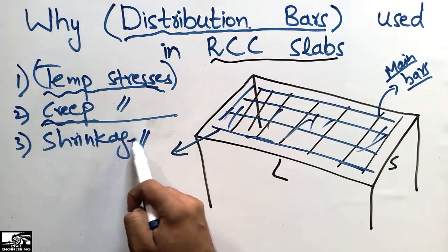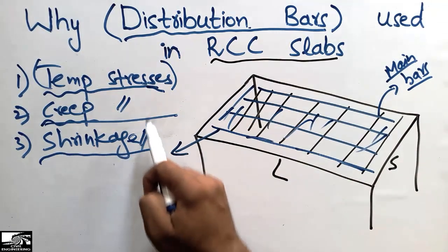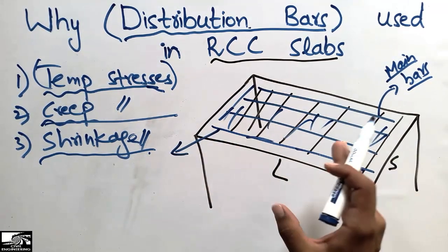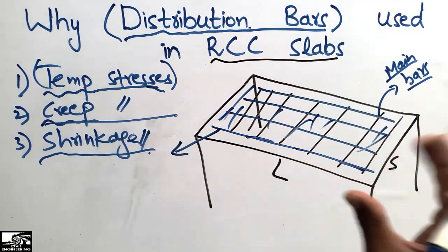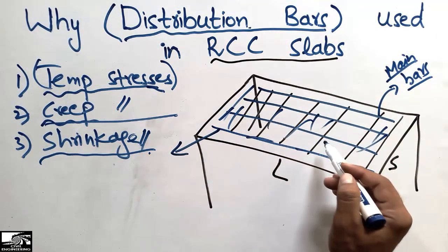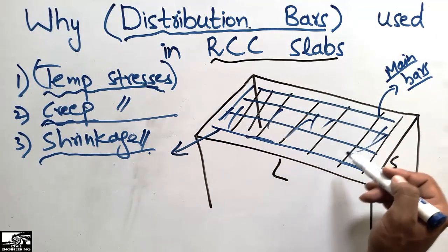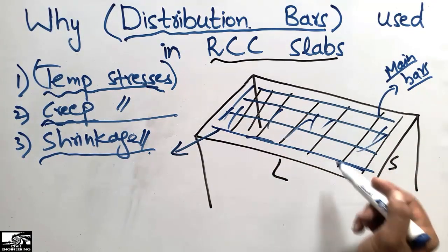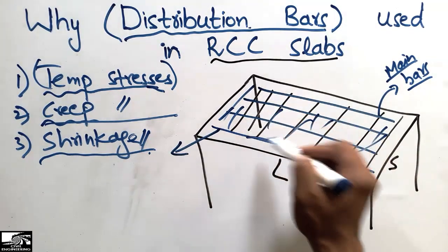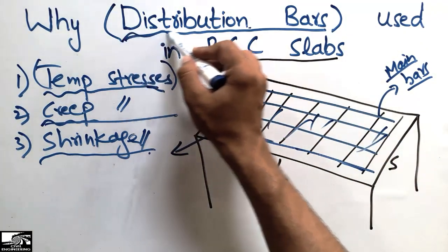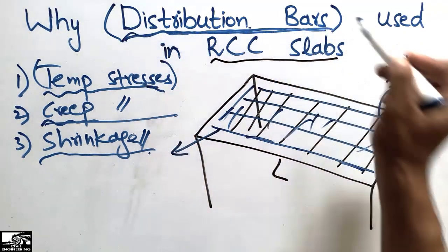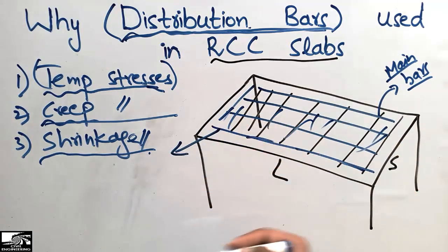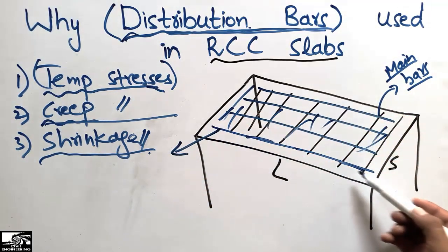The third type is shrinkage stresses, which are related to temperature stresses. Due to temperature change, the slab expands and shrinks, creating tension and compression throughout the slab. The distribution bars are responsible for taking these temperature and shrinkage stresses along the longer direction.